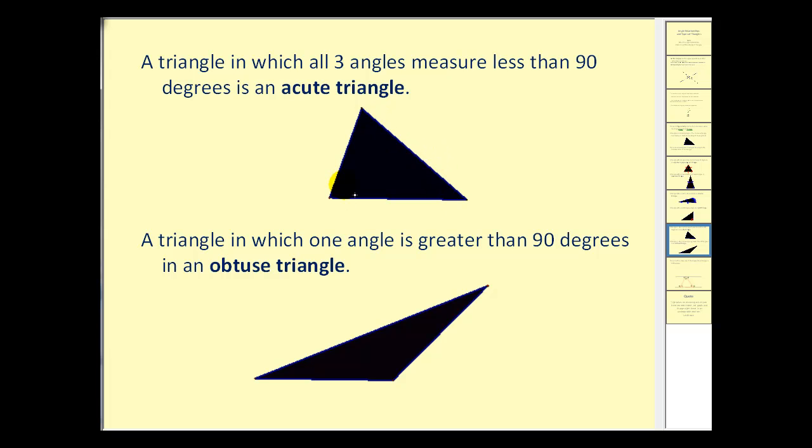And the triangle in which one angle is greater than 90 degrees is an obtuse triangle. And we can see that this angle here is what makes this an obtuse triangle because this is more than 90 degrees.